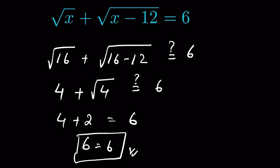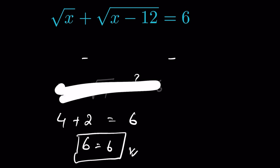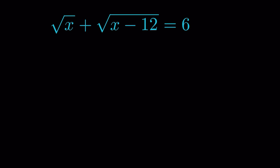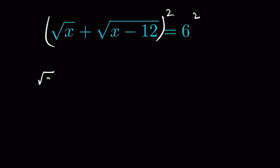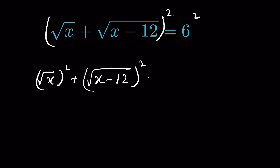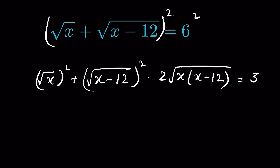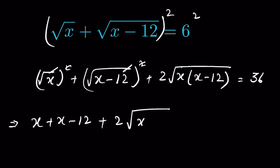We can also solve this equation by squaring both sides in the first step. Squaring gives: square root of x squared plus square root of x minus 12 squared plus 2 times square root of x times square root of x minus 12 equals 36. Removing square roots: x plus x minus 12 plus 2 times square root of x times x minus 12 equals 36.